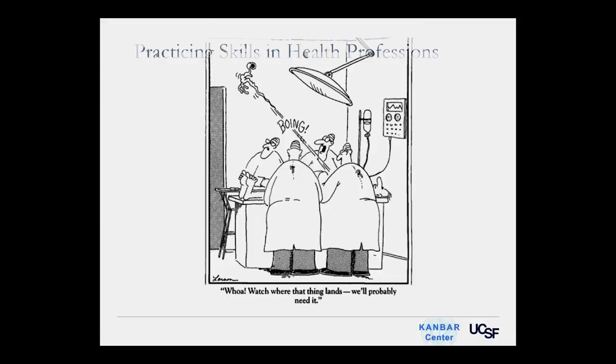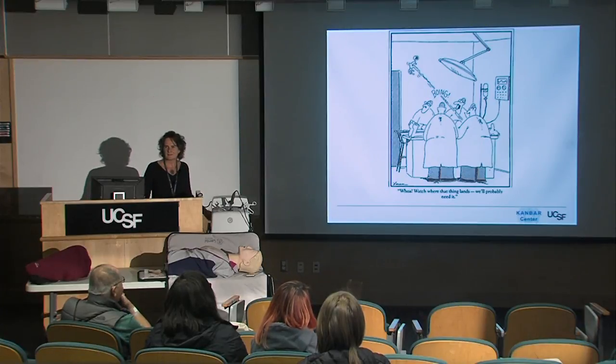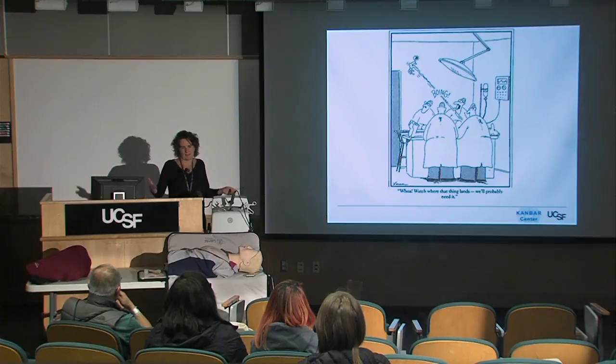This cartoon by Gary Larson shows a group of surgeons where something comes shooting out of the patient — the main artery that supplies blood from the heart to the body — and the caption says 'Well, watch where that thing lands, we'll probably need it.' I put it in there because imagine if surgeons just said, 'I've read it in a textbook and seen some pictures, and now I'm just going to practice surgery.' Something like this would be catastrophic. It doesn't happen, but it's an exaggerated illustration of why practicing on the job is problematic.